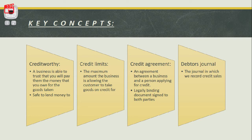A credit limit is the maximum amount that the business is allowing the customer to take goods on credit for. To determine your credit limit, they look at your bank statements, see how much money you earn, what your deductions are, what you spend money on throughout the month, and how much money you have left. Through that they will say, for example, we can offer you an 8,000 Rand credit limit, because they know you will be able to pay that back.